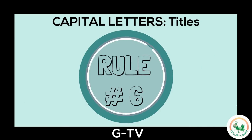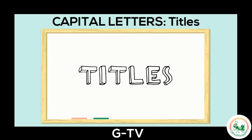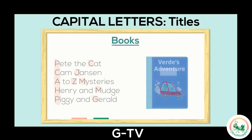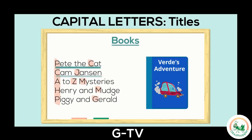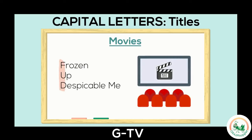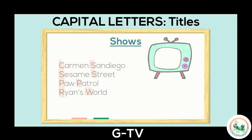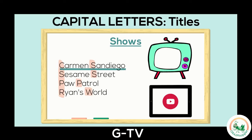Rule number six: write a capital for titles. We use capital letters in titles of books, such as Pete the Cat and Cam Jansen, and in titles of movies, like Frozen and Up. We also use capital letters in titles of TV shows, like Carmen Sandiego, and YouTube shows, like Ryan's World.